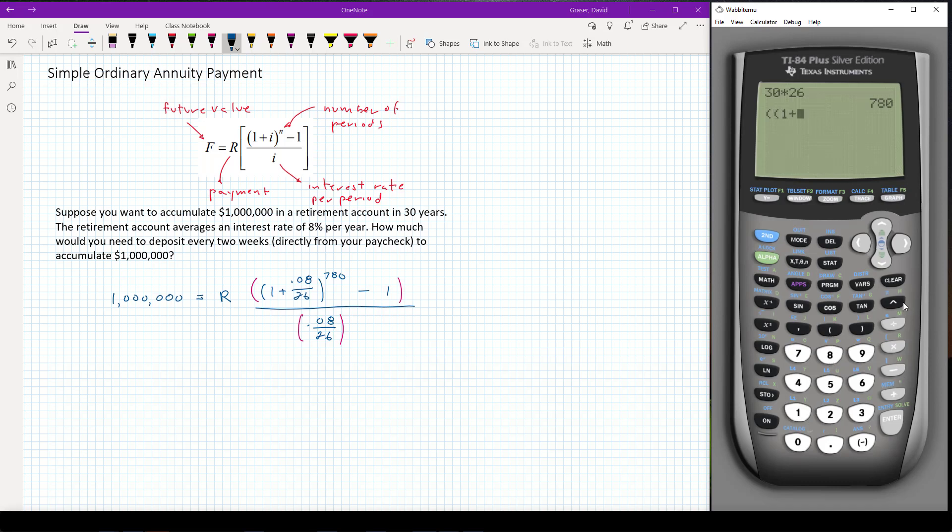1 plus 0.08 divided by 26. End the parentheses. And raise that to the 780th power. Minus 1. And then another set of parentheses that goes around the entire top of the fraction. Now I'm going to divide that. A set of parentheses for the bottom. 0.08 divided by 26. End my parentheses. So I'll check that over really carefully to make sure I have my parentheses in the right place and there are no typos. And then I'll press ENTER.